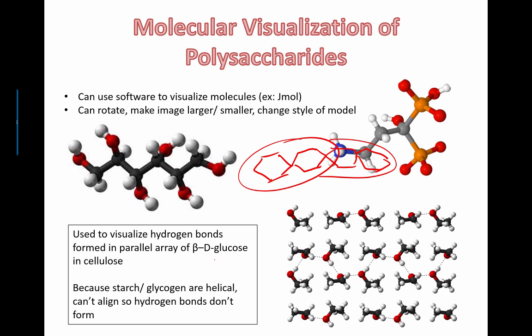If you look at this diagram, these are specific beta-D glucose molecules. Cellulose is made up of beta-D glucose molecules, whereas starch and glycogen are actually made up of alpha-D glucose molecules.